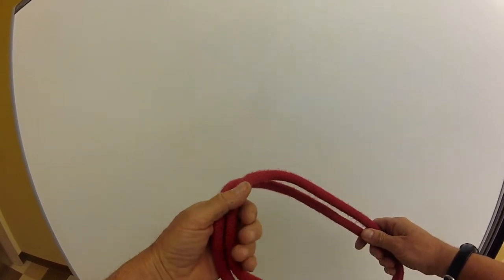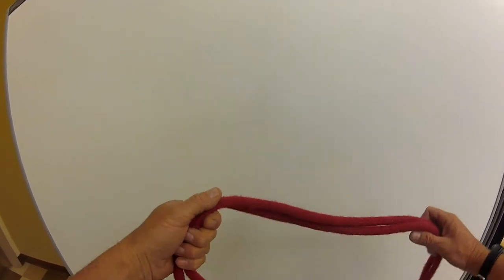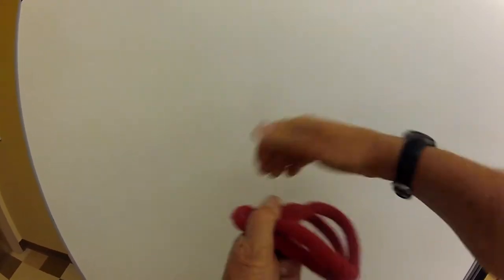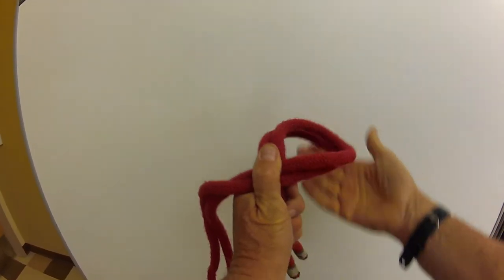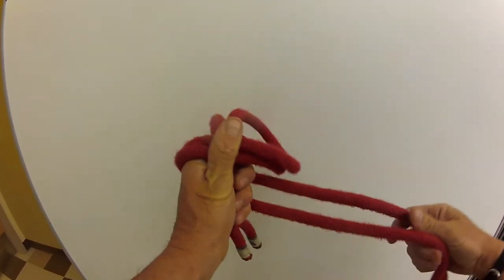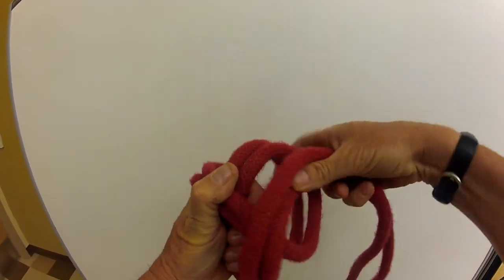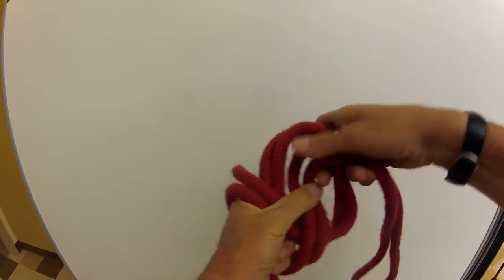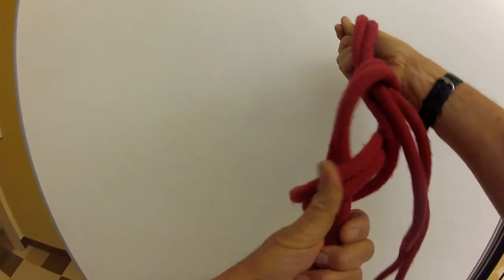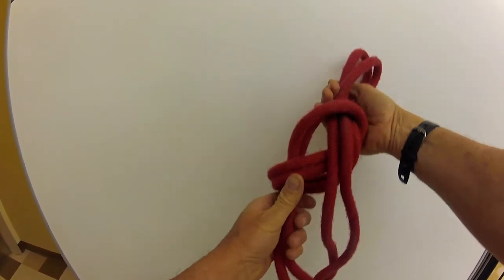I'm going to start this the same way I would with my single loop figure eight, coming around and making my loop. Now this is going to come all the way to the front, but instead of taking the end of the loop through here, I'm going to take a bite through it like this. Once I've done that,